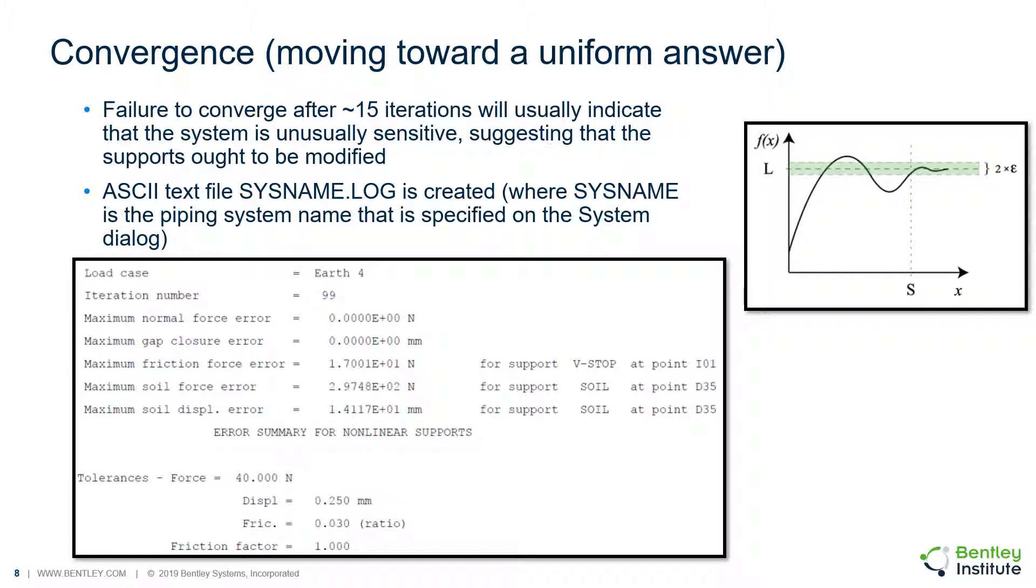But if you just say no, you do not want to continue iterating, you will be given an opportunity to view an ASCII text file, usually named the system name .log, where the system name is the piping system name. That log file is created to help you diagnose why your model is not converging. This file can be used to identify the supports or support which failed to converge.